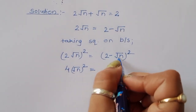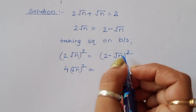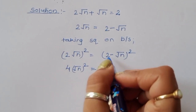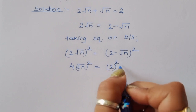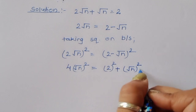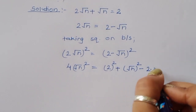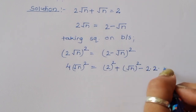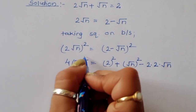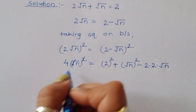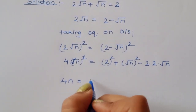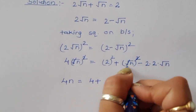Now, the right side is a minus b whole square. The formula for a minus b whole square is a squared plus b squared minus 2ab. So a squared plus b squared minus 2 times a times b. Now, 4n is on the left; the square root of n whole square cancels the square root, so it becomes n.